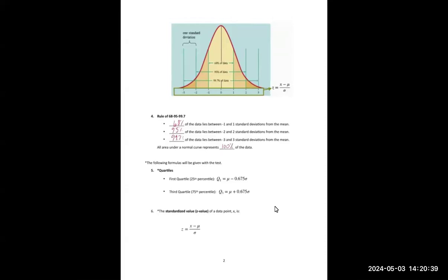The following formulas will be given to you on the test. To find the first quartile — where 25 percent of the data is below that value — take the mean and subtract 0.675 times the standard deviation. To find the third quartile, take the mean plus 0.675 times the standard deviation. You can also find the standardized value — the Z-score — of any particular data point using the equation Z equals X minus mu over sigma.